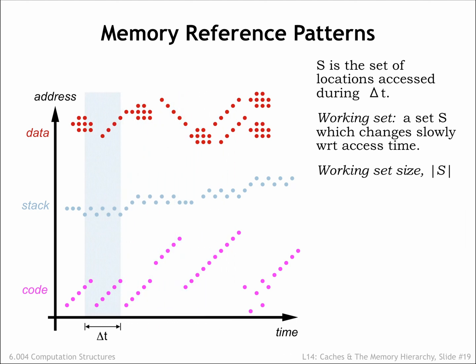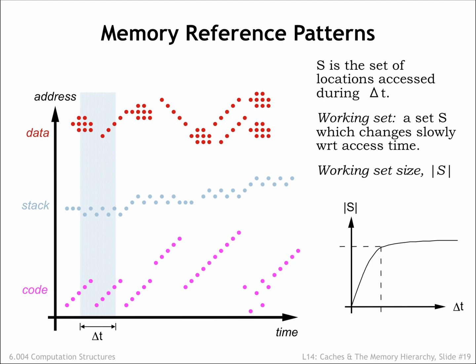Using simulations, we can estimate the number of different locations that will be accessed over a particular span of time. What we discover is the notion of a working set of locations that are accessed repeatedly. If we plot the size of the working set as a function of the size of the time interval, we see that the size of the working set levels off. In other words, once the time interval reaches a certain size, the number of locations accessed is approximately the same, independent of when in time the interval occurs. As we see in our plot to the left, the actual addresses accessed will change, but the number of different addresses during the time interval will, on average, remain relatively constant and surprisingly not all that large. This means that if we can arrange for our SRAM to be large enough to hold the working set of the program, most accesses will be able to be satisfied by the SRAM.